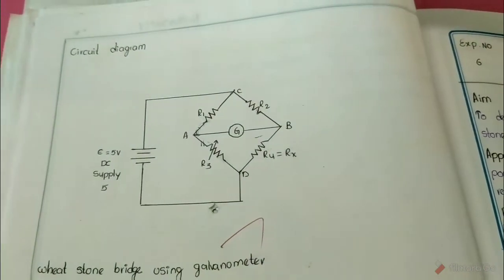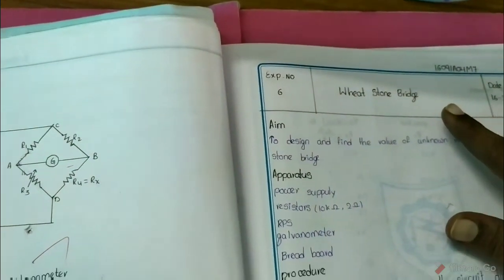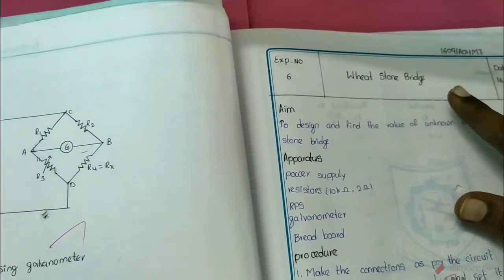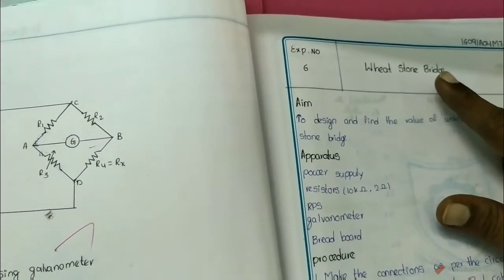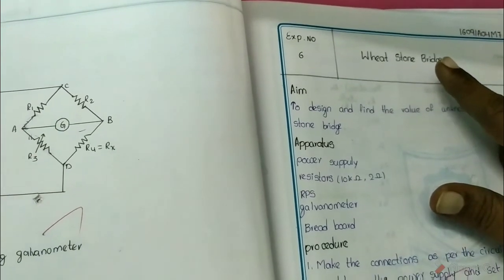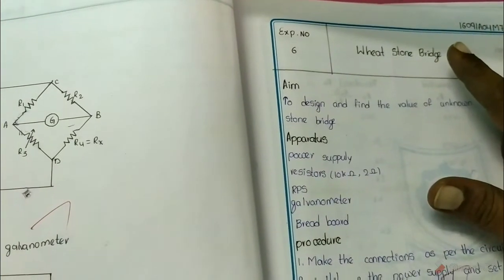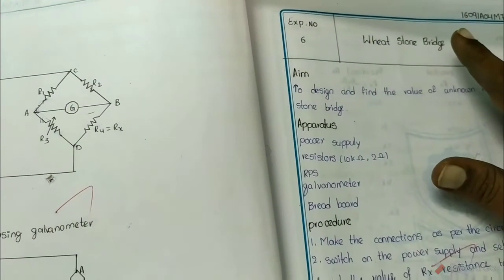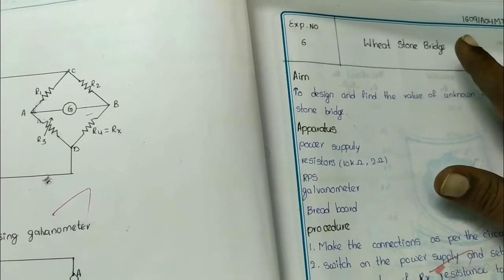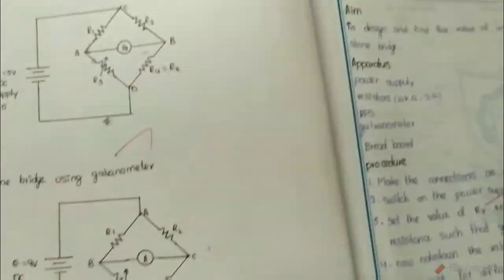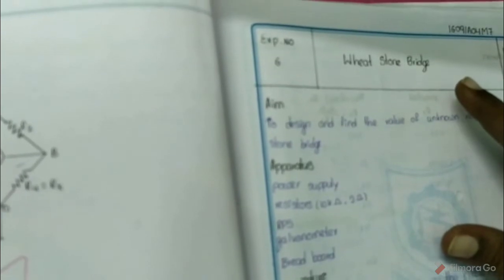The title of this experiment is Wheatstone Bridge. The Wheatstone bridge is mainly used to find out the unknown resistance. In this experiment, we will verify two cases: Case 1, when the bridge is in balanced condition, which is used to find out unknown resistance; and Case 2, when the bridge is in unbalanced condition, which is used to find out current values.